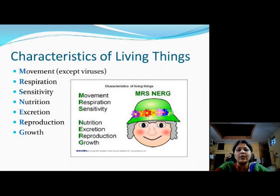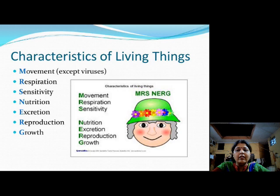Coming on to the next point, that is nutrition. All of us take in food because it gives us energy. The food provides nutrients, and these nutrients give us the energy to exhibit all the different life processes. Then comes excretion — after taking in food and digesting it, there is a necessity for removal of nitrogenous waste from the body, and that is known as excretion. Then comes reproduction — all living organisms reproduce their own kind, and that is a characteristic of living beings. Next comes growth — all living organisms show the signs of growth; they are always growing.